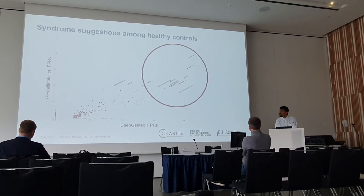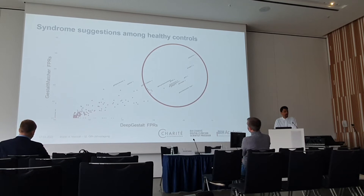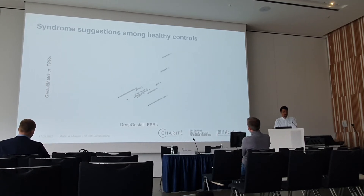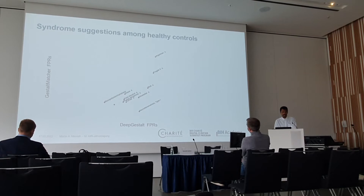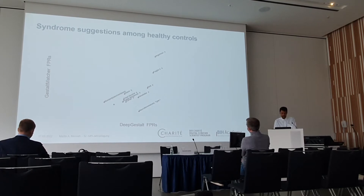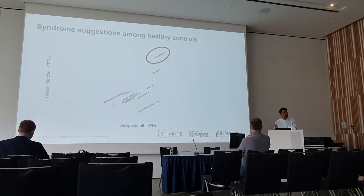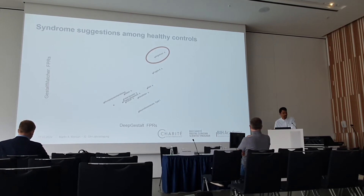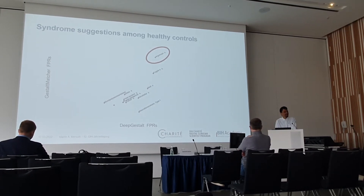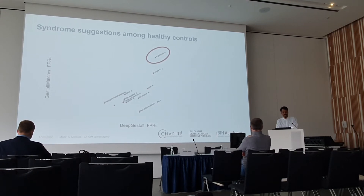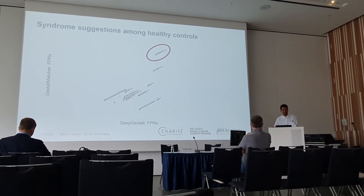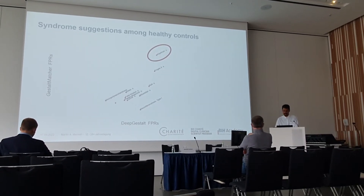Nevertheless, there is a group of syndromes that feature high false positive rates. When we had a closer look at which syndromes these actually were, we found that the single syndrome with the highest false positive rate in either tool was Angelman syndrome. Think again of the image of me — Angelman syndrome was one of the suggestions. So this has nothing to do with my face; it's because the tools are biased towards this suggestion.